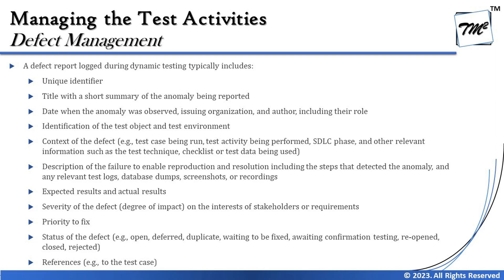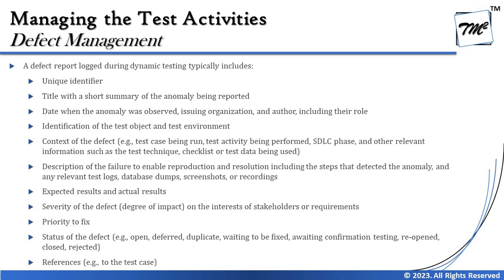The fields typically include: a unique identifier — the defect ID; a title with a short summary of the anomaly being reported, a one-liner telling people what the defect is about; the date when the anomaly was observed; and the issuing organization and author, including their role. The date helps track progress, the issuing organization indicates who identified it, and the role matters because not only testers find defects — during reviews, developers and designers can also find defects.